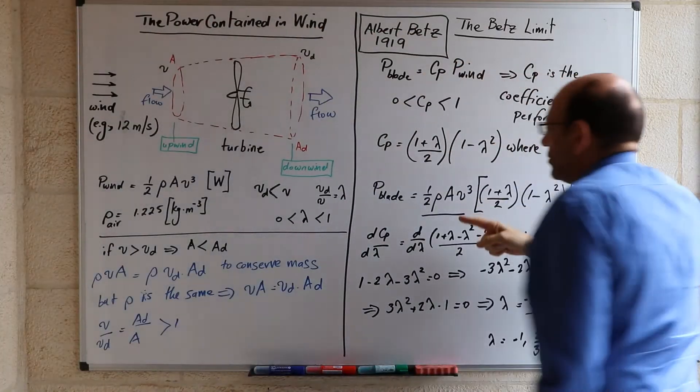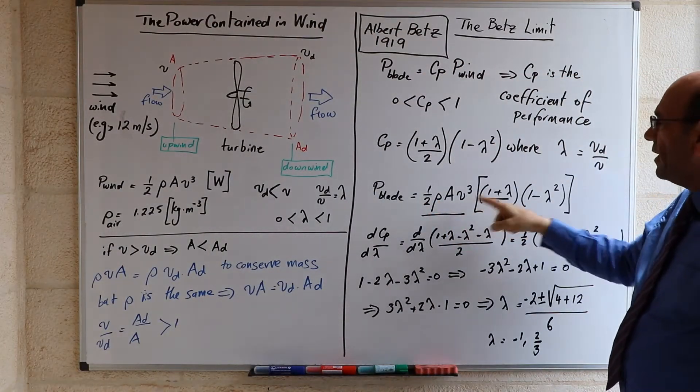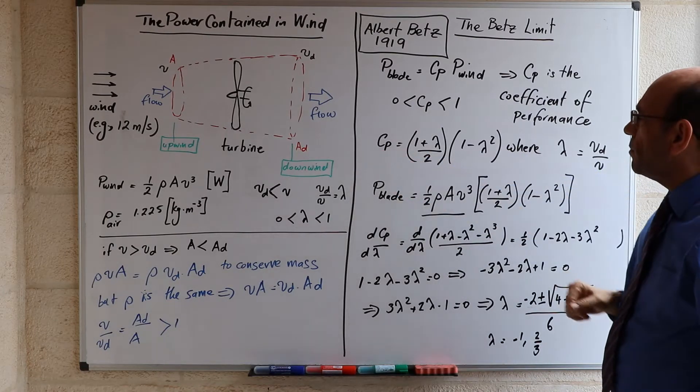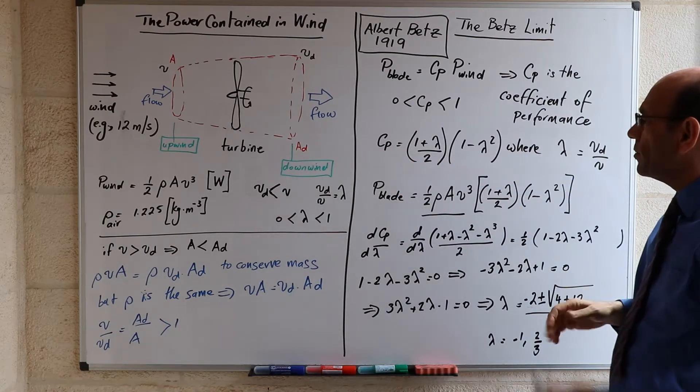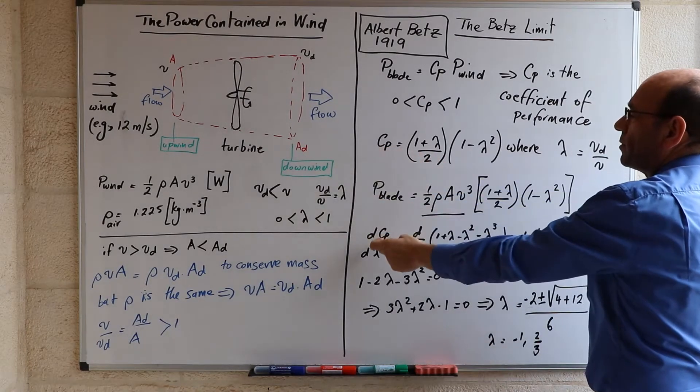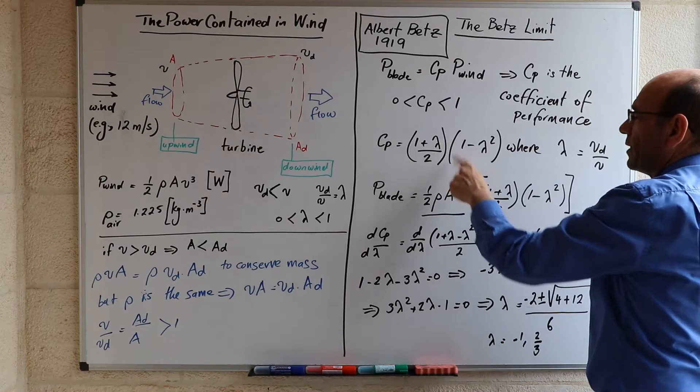The next step is to actually find the value of lambda that maximizes this coefficient of performance. And in order to do that, we take the coefficient of performance and we differentiate it with respect to lambda.